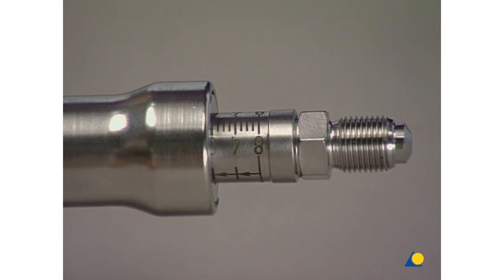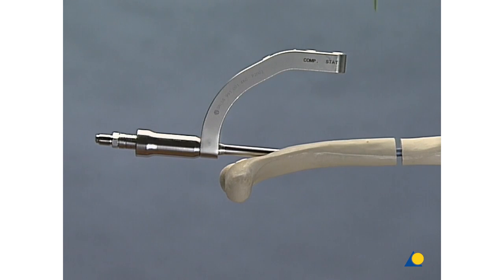The compression device may be used for antegrade or retrograde insertion. In this exercise, the UHN is inserted from retrograde and the fracture gap is measured.